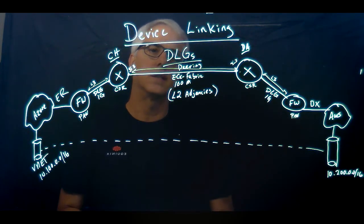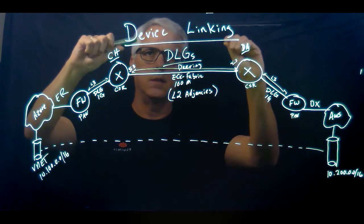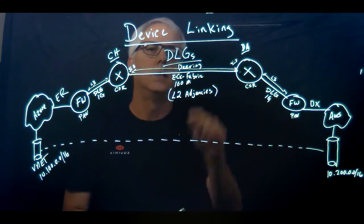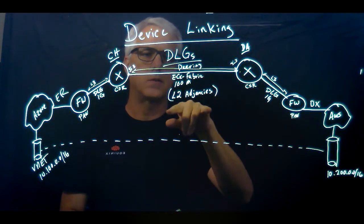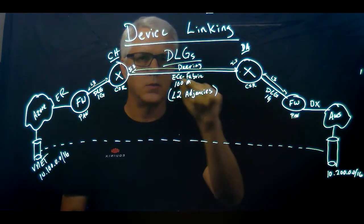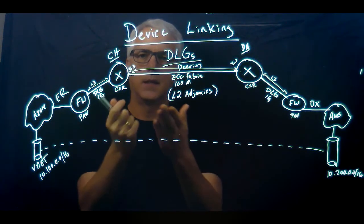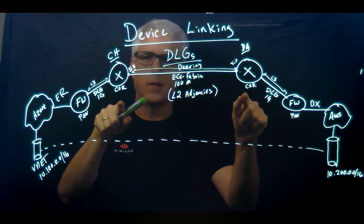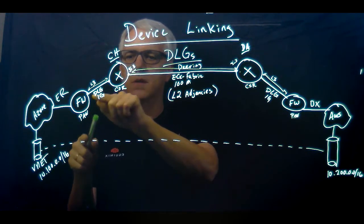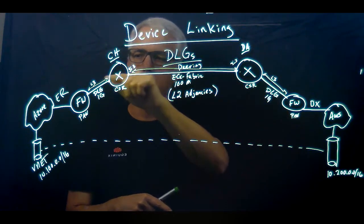And that's how device links work. Again, device linking is the overall concept of how you do it. Device link groups are the constructs where you take the interfaces, put them in the groups that you need to establish a layer two adjacency between the respective network edge devices. And again, the network edge devices can be across metros or within the same metros. You're going to establish a layer two adjacency over so you can build layer three peering over the top.